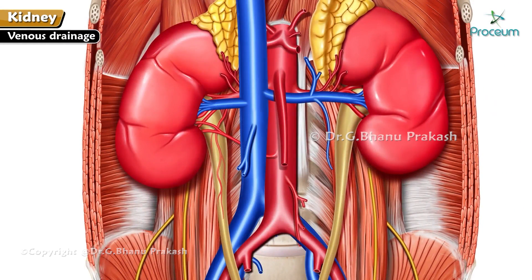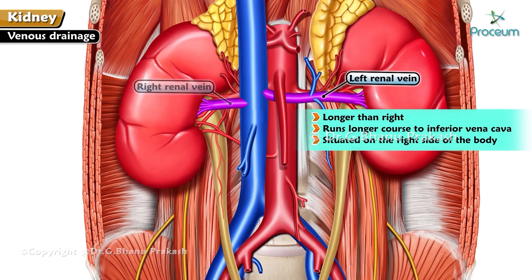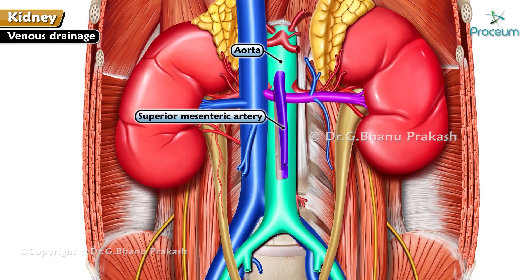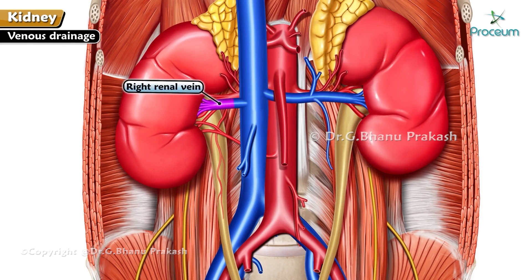Venous drainage: Venous blood from the kidney is drained by the renal veins. A single vein exits each kidney at the hilum, anterior to the renal artery, and drains into the inferior vena cava. The left renal vein is longer than the right because it runs a longer course to the inferior vena cava, which is situated on the right side of the body. The left renal vein crosses the midline between the aorta and the superior mesenteric artery. The left suprarenal and gonadal veins drain into the left renal vein, whereas on the right they drain into the vena cava.